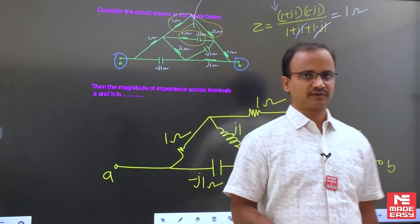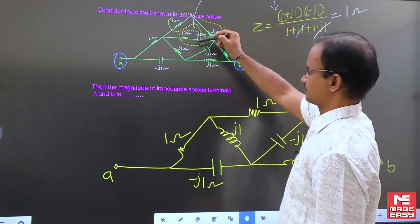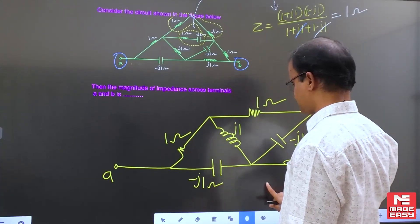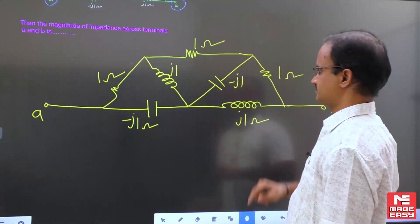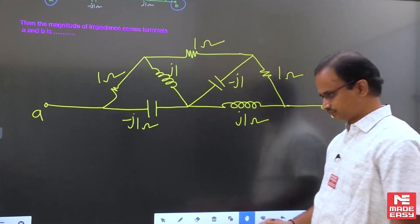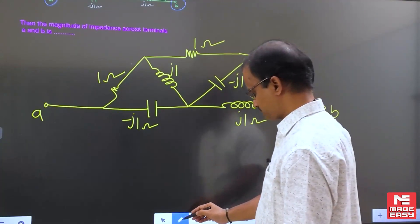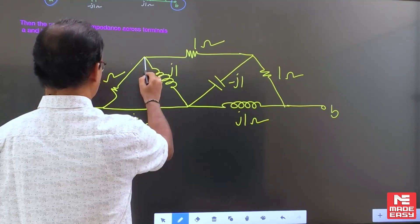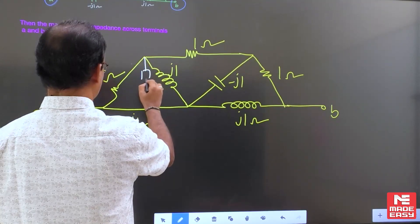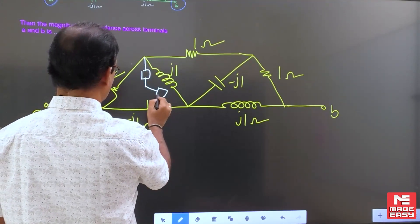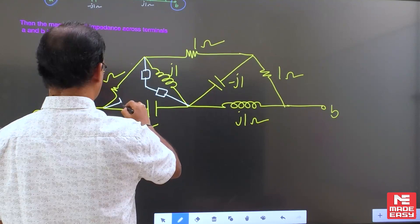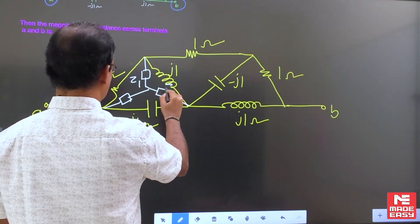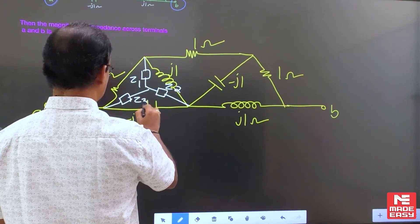In this example, this branch is run both in parallel, so the equivalent impedance is equal to 1. Let us simplify further. For this particular example we have Z1, Z2, and Z3.